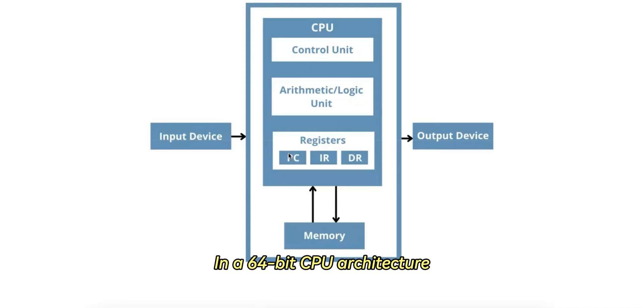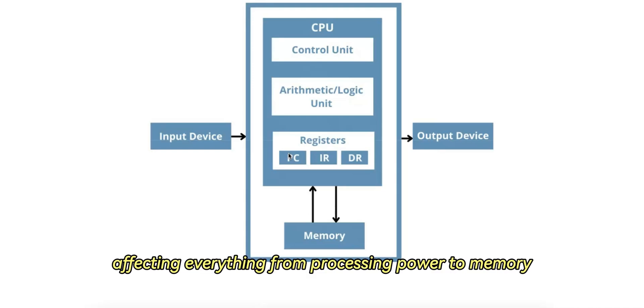In a 64-bit CPU architecture, each register can hold a 64-bit value, allowing the CPU to process larger numbers or more precise data. The bit width of the register reflects the CPU's data handling capabilities, affecting everything from processing power to memory addressing.